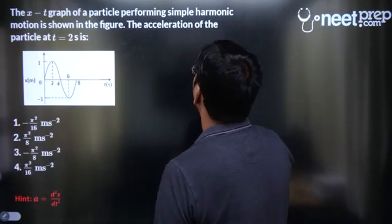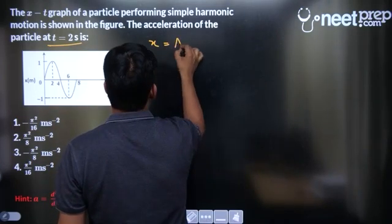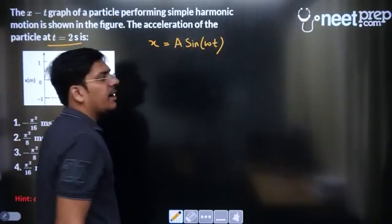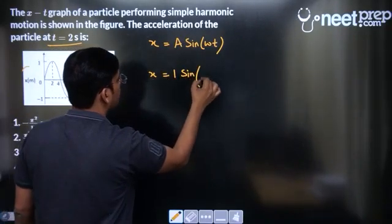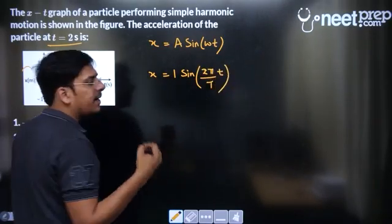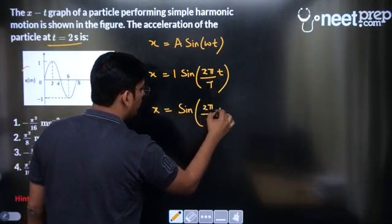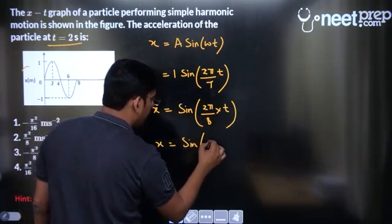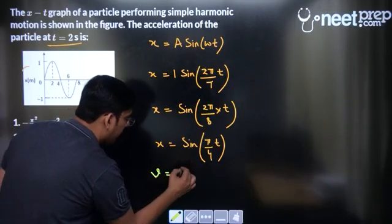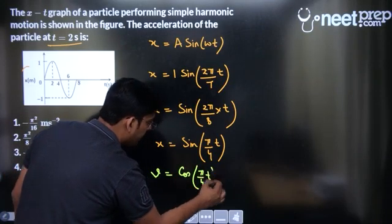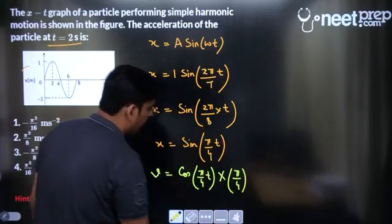The x-t graph of a particle performing SHM is shown. We need to find the acceleration at t = 2 s. Since the graph resembles a sine curve, x = A·sin(ωt). The amplitude A = 1 m and the time period T = 8 s, so ω = 2π/8 = π/4. Thus x = sin(π/4 · t). Differentiating, velocity = cos(π/4 · t) × (π/4).